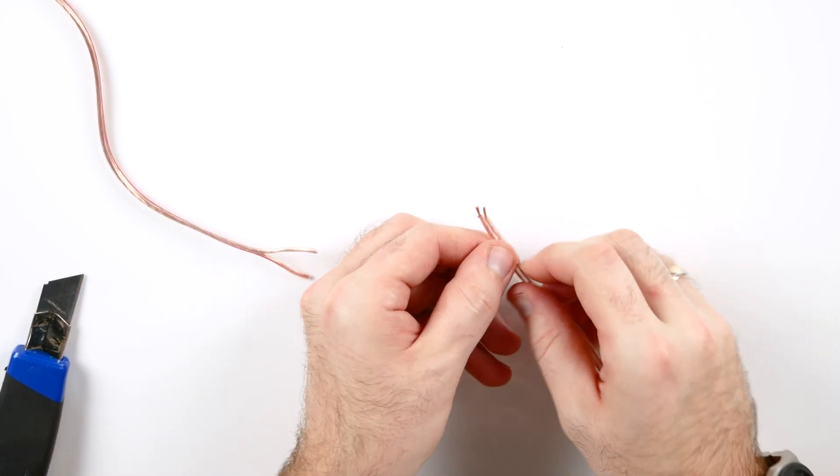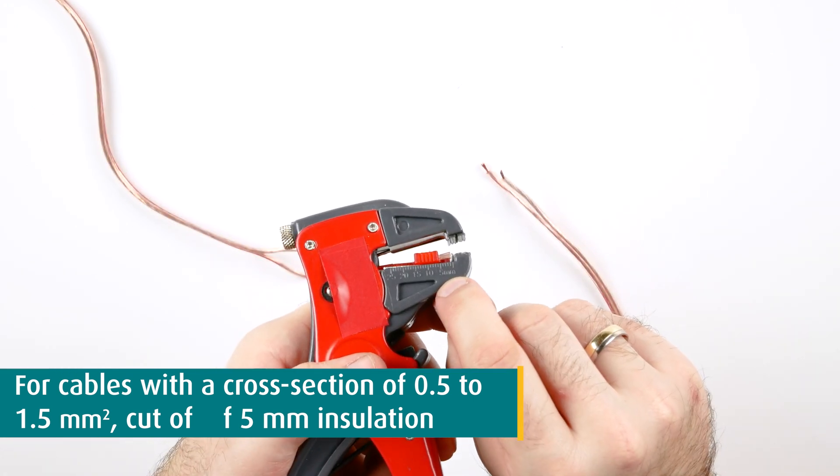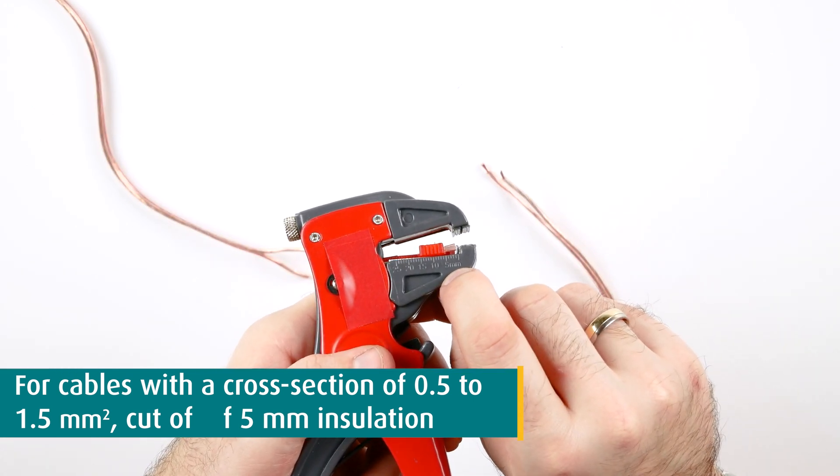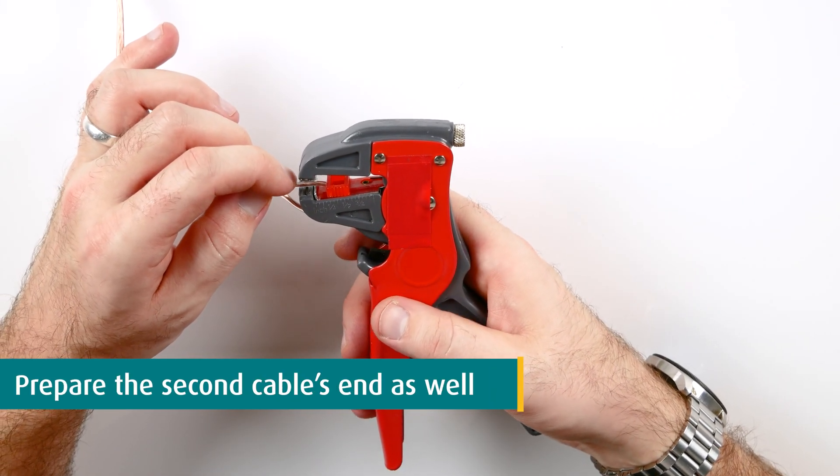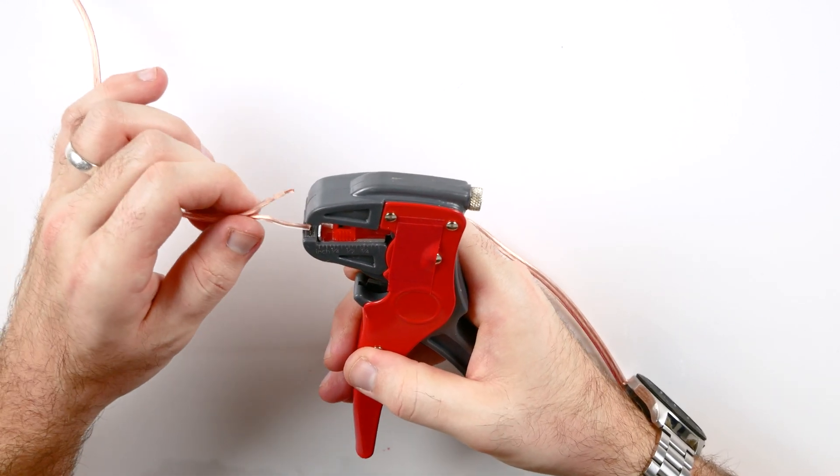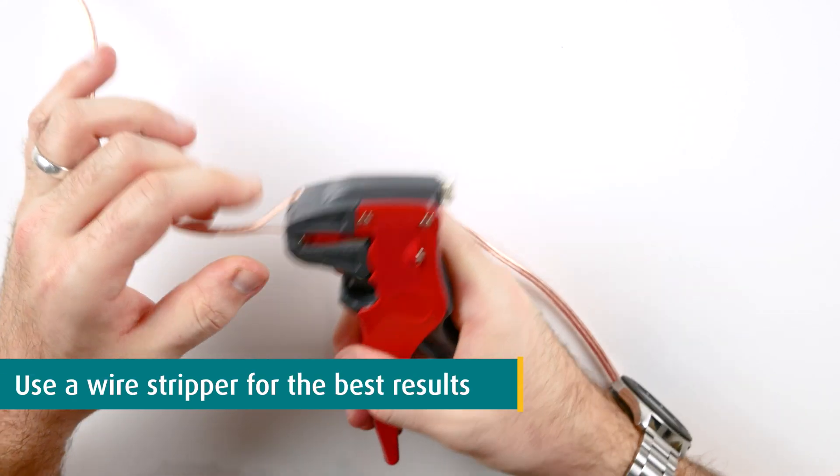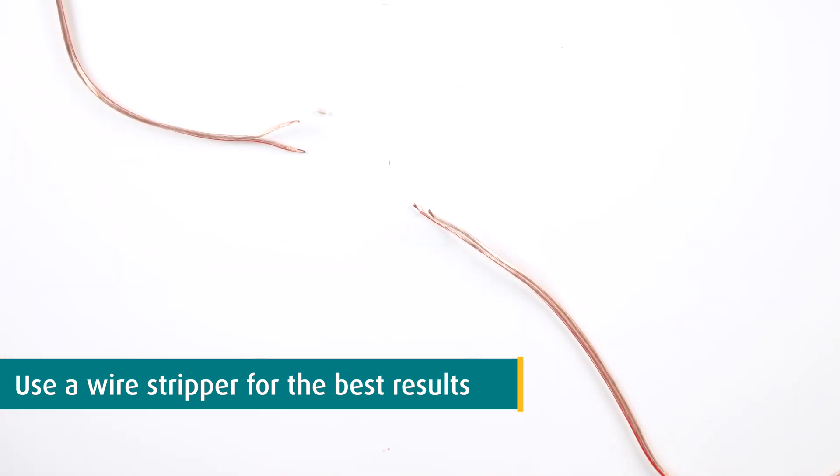The uncovered part should, in this case for such a diameter of cable, have a length of around 5mm. Repeat the same for the other cable's end. As you can see, a wire stripper is way more comfortable, safer and quicker, so it's highly recommended to use one.